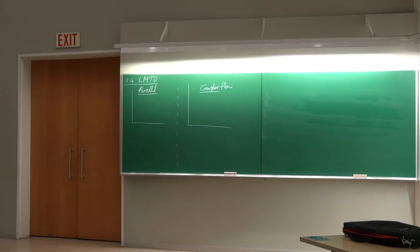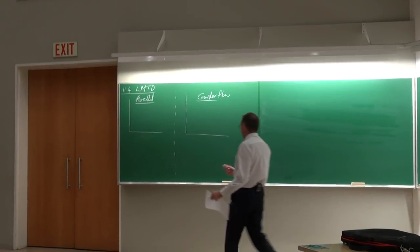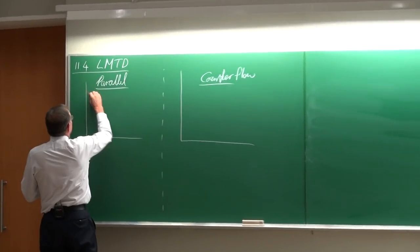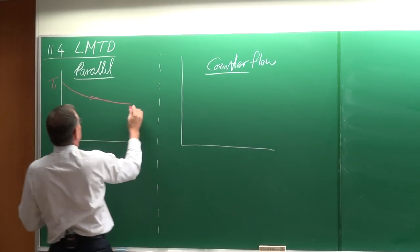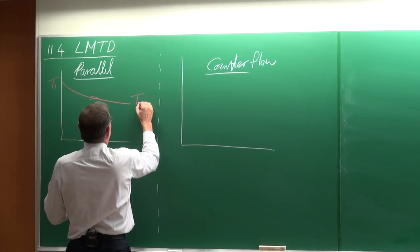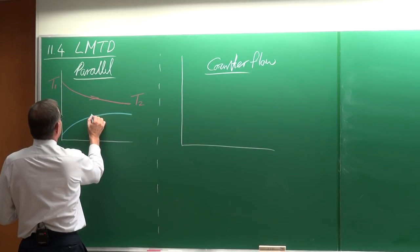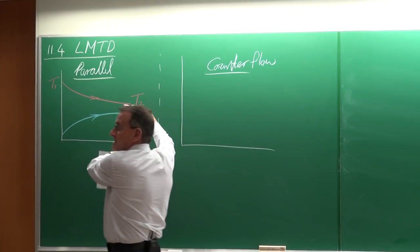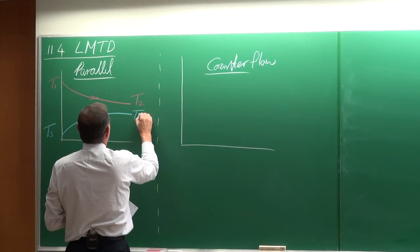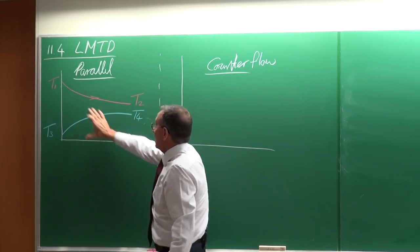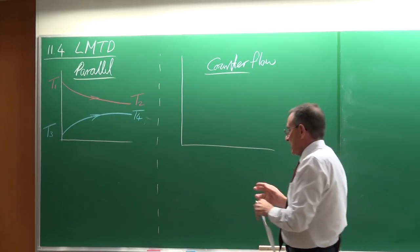Let me use red and blue to indicate the hot stream and the cold stream. With the parallel heat exchanger, the hot stream will have temperature T1 at entry and T2 at exit. Because the two streams are flowing in the same direction, the cold stream enters at T3 and exits at T4. So the temperature difference decreases as the flow passes through the heat exchanger.